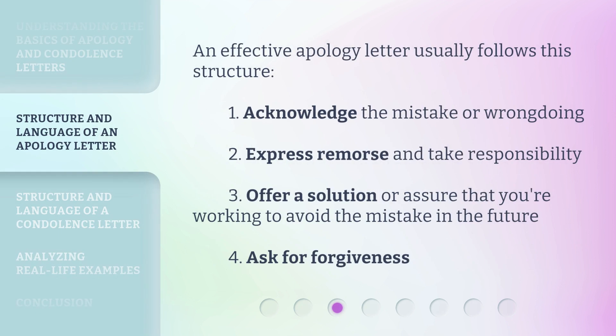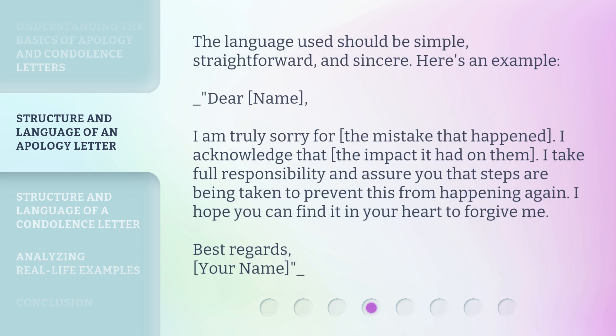An effective apology letter usually follows this structure: 1. Acknowledge the mistake or wrongdoing. 2. Express remorse and take responsibility. 3. Offer a solution or assure that you're working to avoid the mistake in the future. 4. Ask for forgiveness. 5. The language used should be simple, straightforward, and sincere.